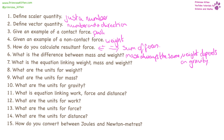The equation linking weight, mass, and gravity is: weight equals mass times gravity. The units for weight are measured in newtons, mass is measured in kilograms, and gravity is 9.81 newtons per kilogram.